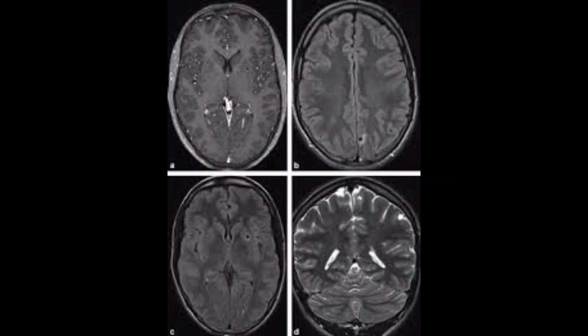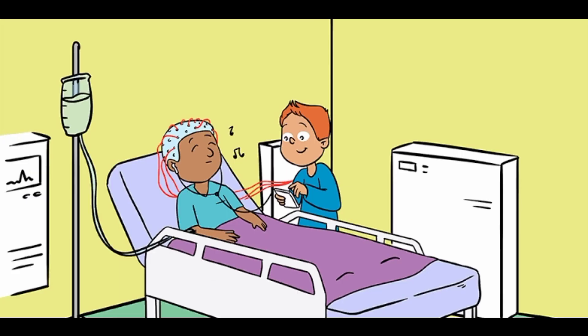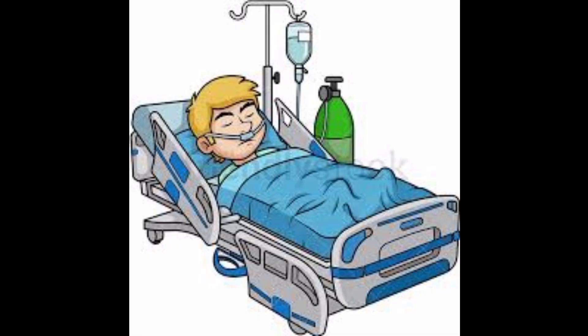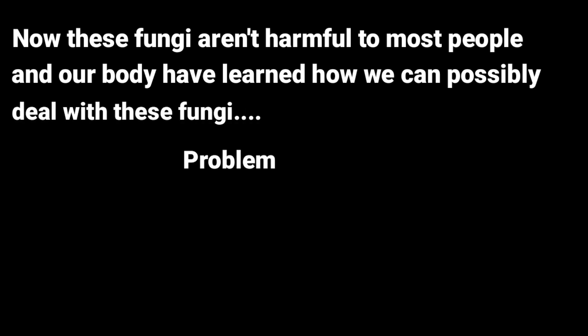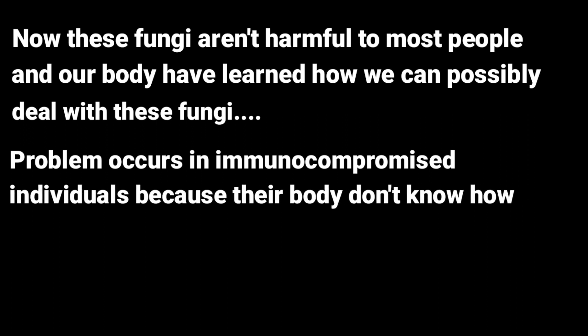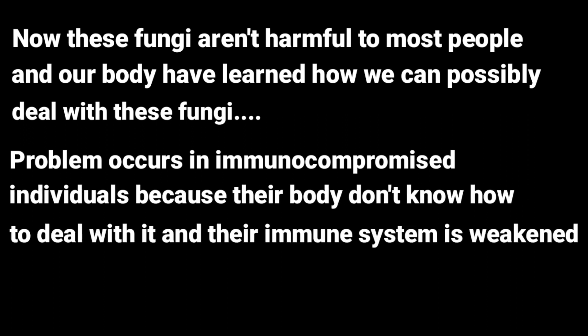The last type is disseminated mucormycosis, which typically occurs in people who are suffering from other medical conditions, making it hard to determine which symptoms are related to mucormycosis. Patients with disseminated infection in the brain can develop mental status changes or coma. These fungi are not harmful to most people, and our body has learned how to deal with them. The problem occurs in immunocompromised individuals, because their immune system is weakened.